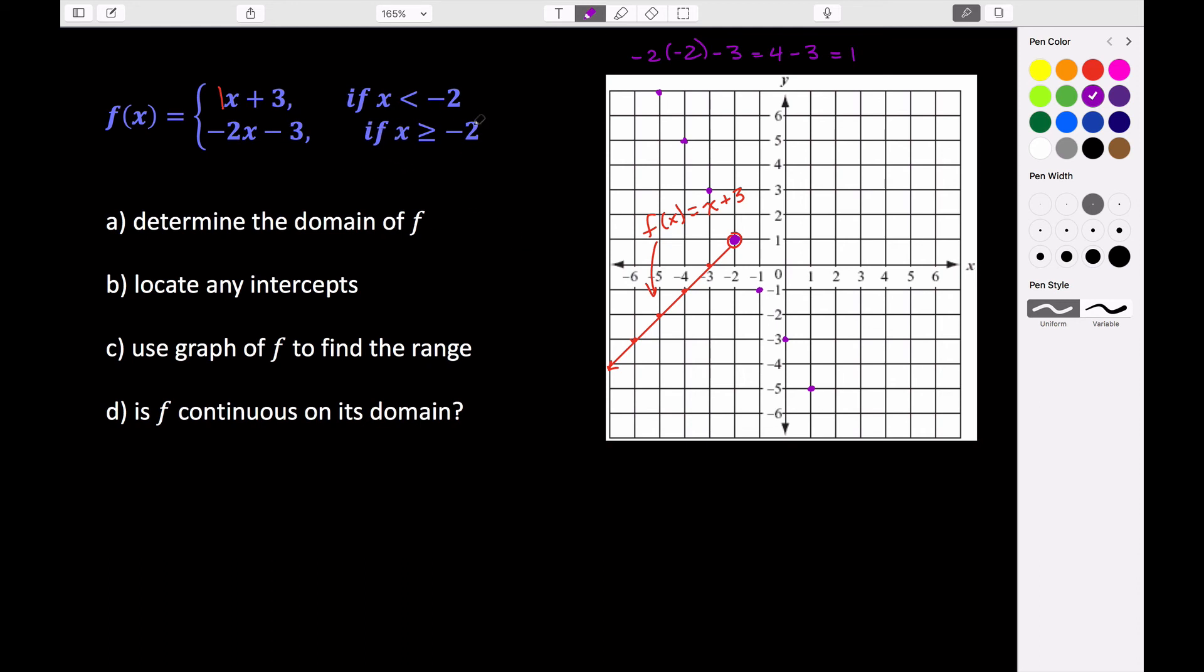But if we look at this restricted interval here, we know that all of these values that are on this purple graph have to be greater than or equal to negative 2. So they all have to be to the right of negative 2. So these values had to have come from a value of x to the right of negative 2. So that means that all of these other values don't work.